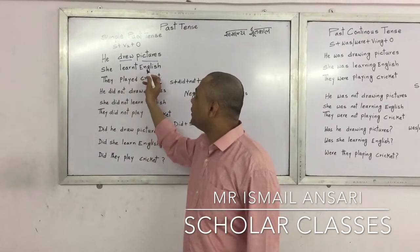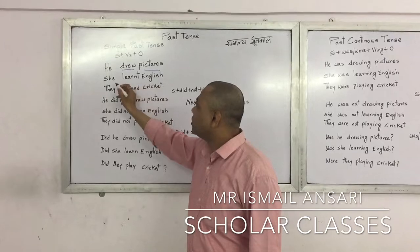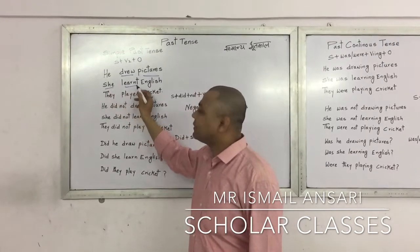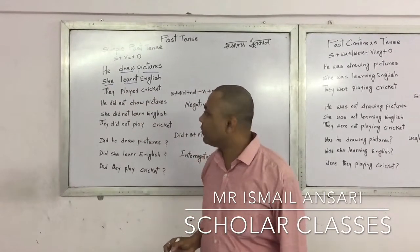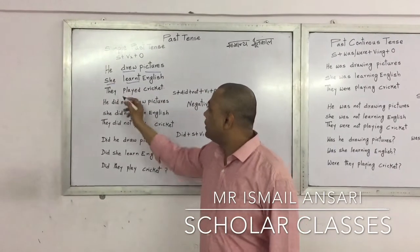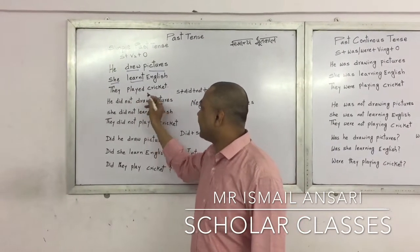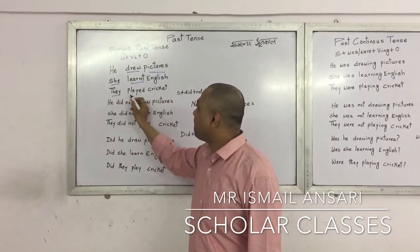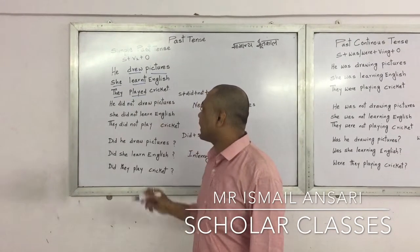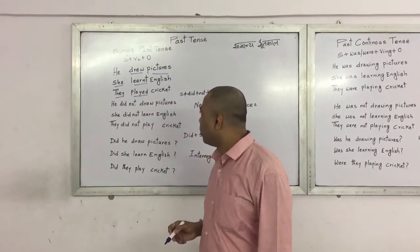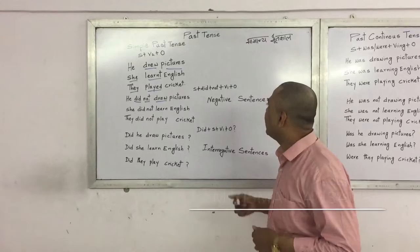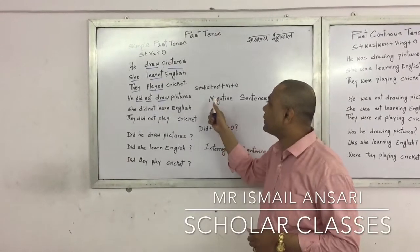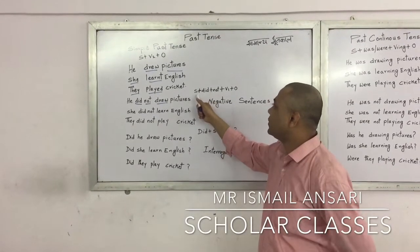Next is: She learnt English. Here 'she' is the subject, 'learnt' is the second form of the verb. Then: They played cricket — 'they' is the subject, 'played' is the second form of the verb. So the formula for a negative sentence in simple past tense is: